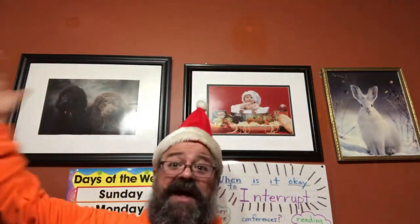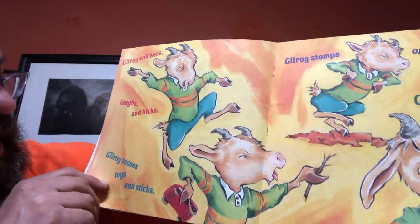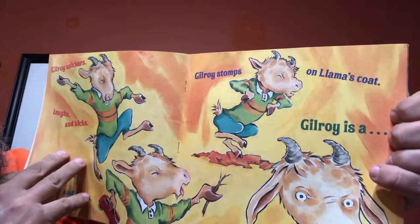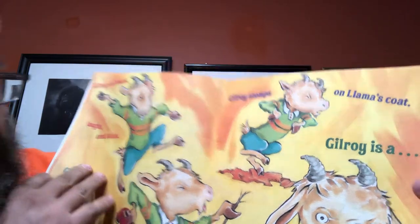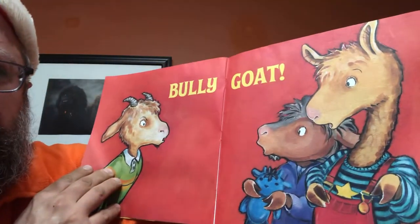This is the exact middle of the story. What's going on? In the beginning, everyone's having fun — they're learning, playing in the classroom, smiling, working together. Now: 'Gilroy snickers, laughs and kicks — he tosses toys and sticks. Gilroy stomps on llama's coat — Gilroy is a bully goat.'